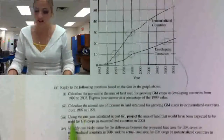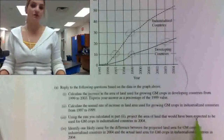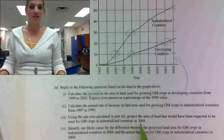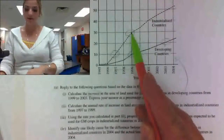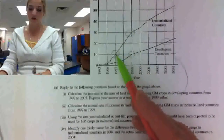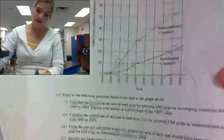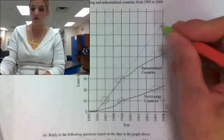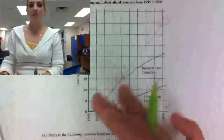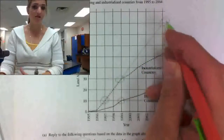On the next part, it says: using the rate you calculated in Part II, project the land area expected to be used for genetically modified crops in industrialized countries in 2004. If I look at 1999, I ended at 30 million hectares. This slope shows me that every year I'm going up 10 million — 10 more million, 10 more million, and so on. Just graphically, I should get 80 million as my answer.